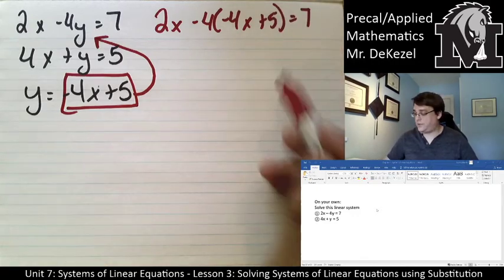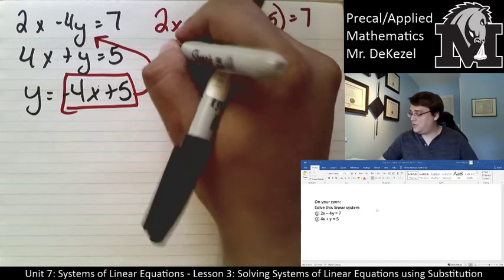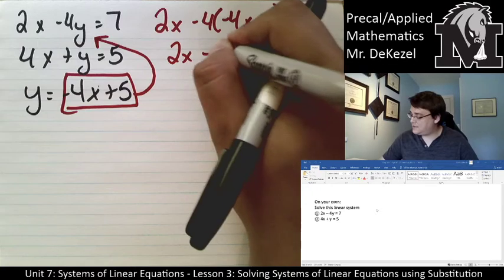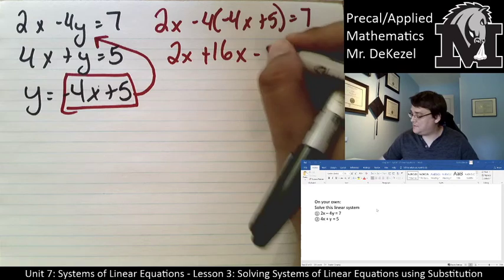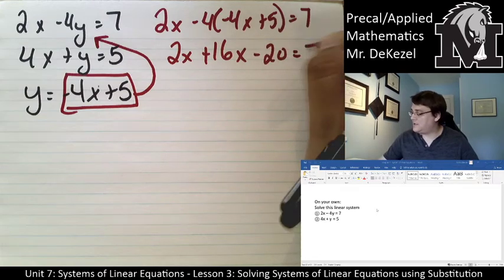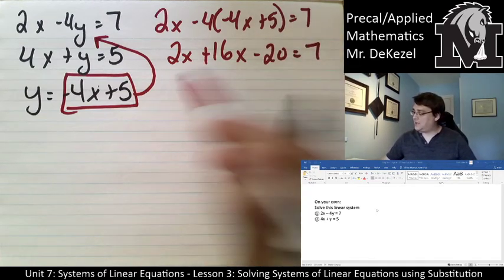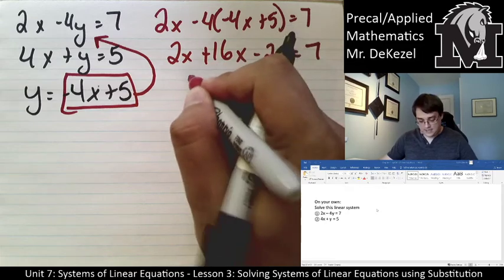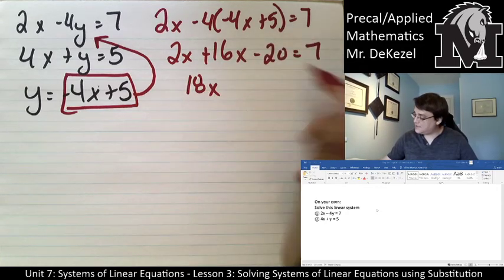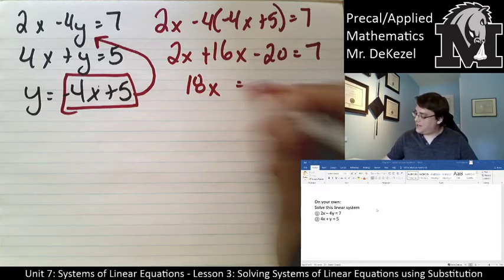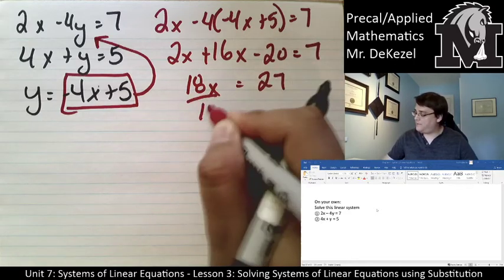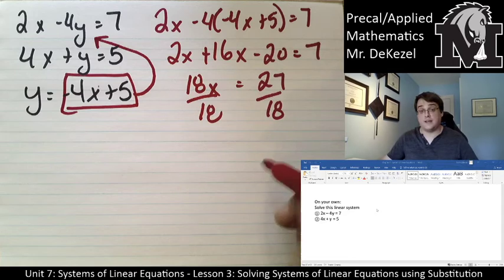So 2x minus 4 times (-4x plus 5) equals 7. All right, I've just plugged in that for x. 2x plus 16x minus 20 equals 7. We add these two together, it looks like we get 18x and then I'm going to add 20 to both sides. So that equals 27. Divide both sides by 18 to isolate x.